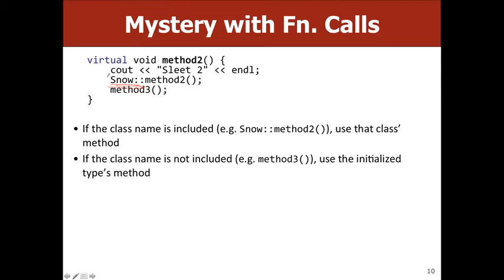Another question: what if a method inside a class calls method2, and the initialized type doesn't have method2 explicitly? In that case you'd use the superclass's method2, and it'll automatically work because the subclass has all the methods the superclass does. The reason you'd call snow::method2 explicitly is when you specifically want snow's version and you think it might have been overwritten — like how a lawyer's salary was twice the salary of an employee.